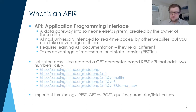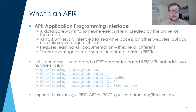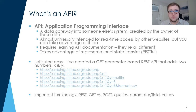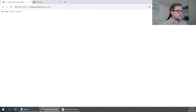Let's dive into a real API — and by a real API, I mean an API that I made myself. You see a website here: scraping.tntlab.org/add.php. This is a literal API which I created myself on my server. I'd like you to take a moment and go to this website and see what happens.